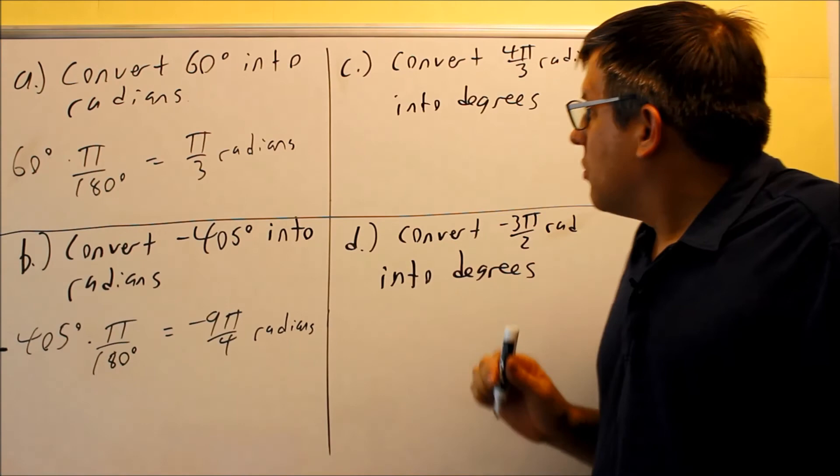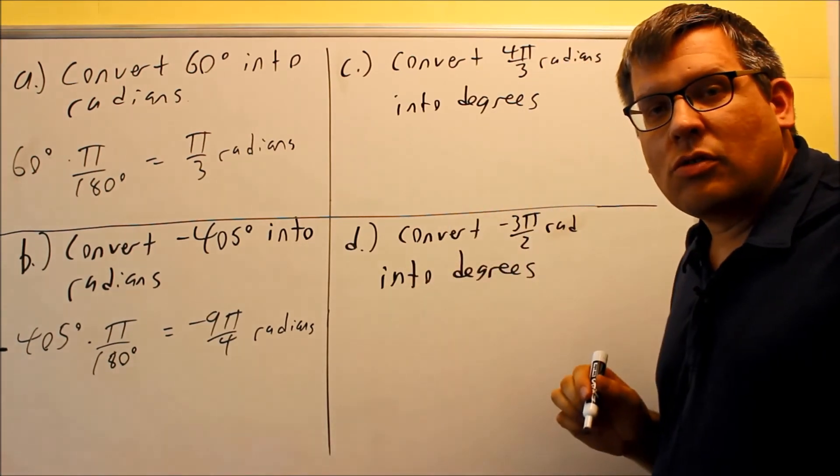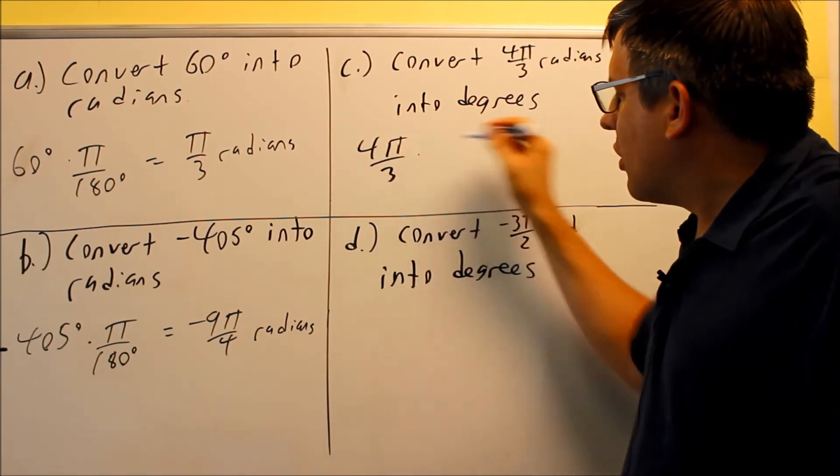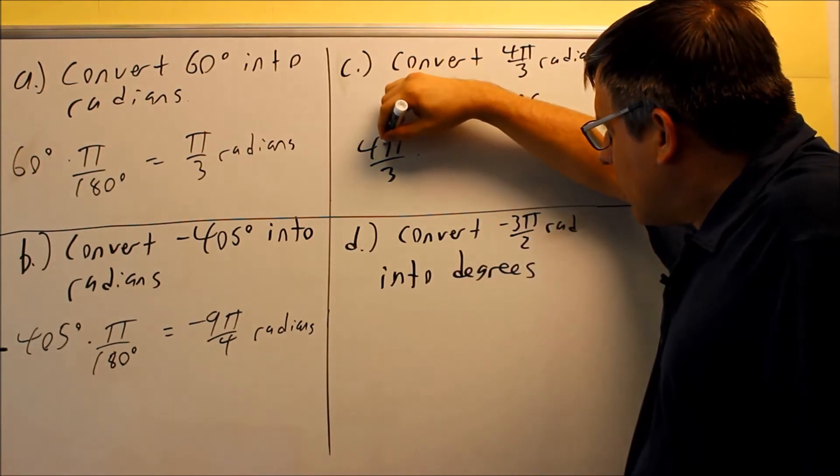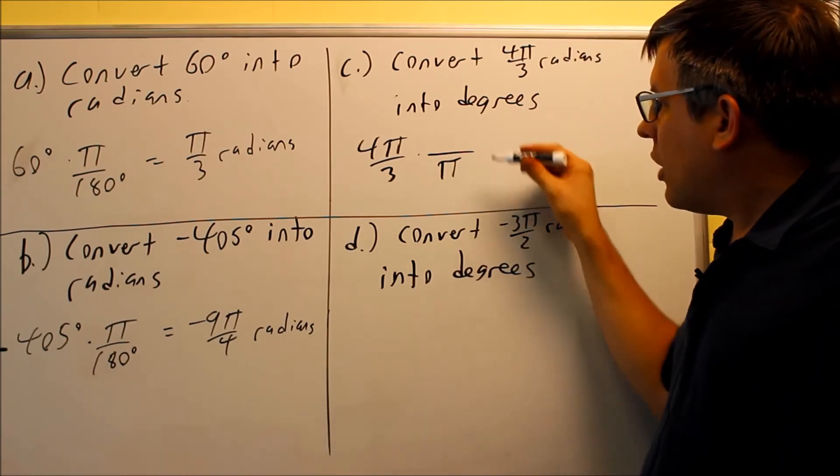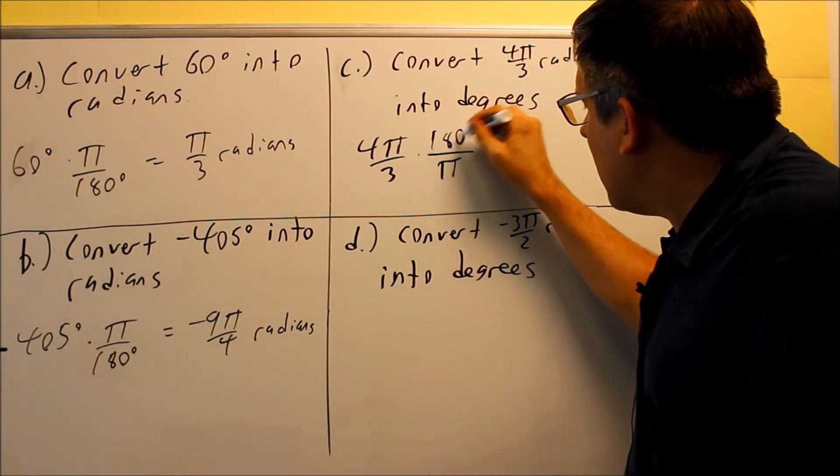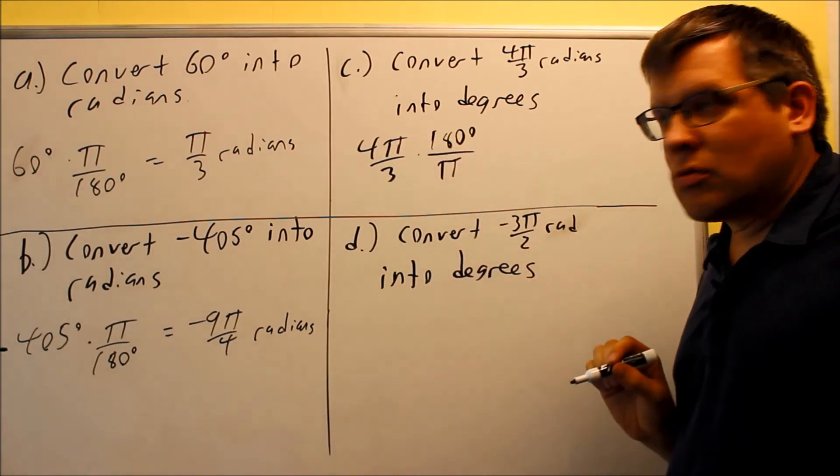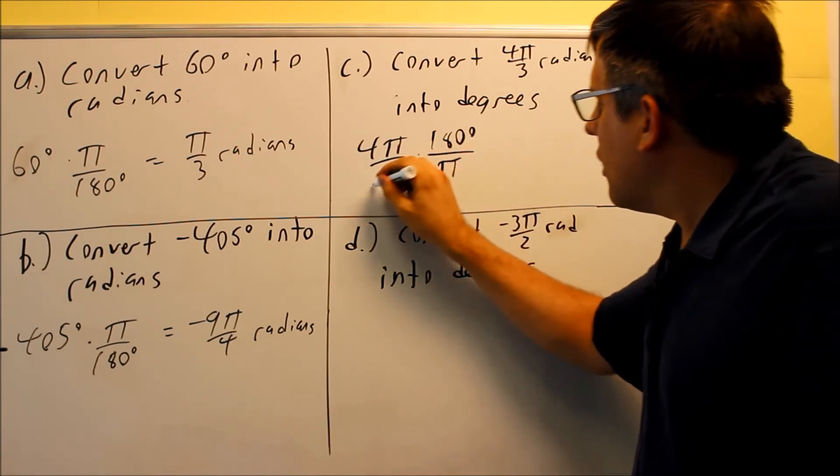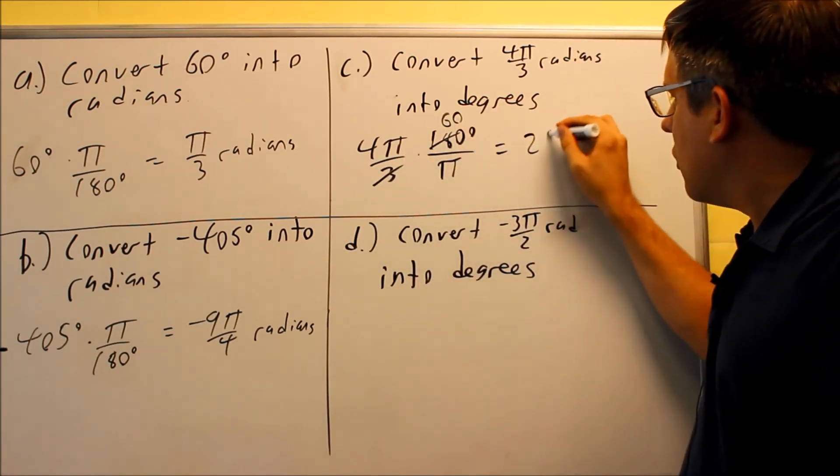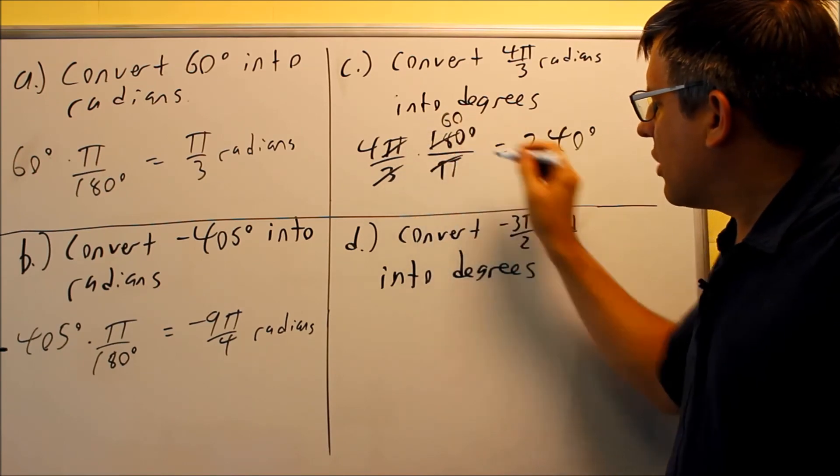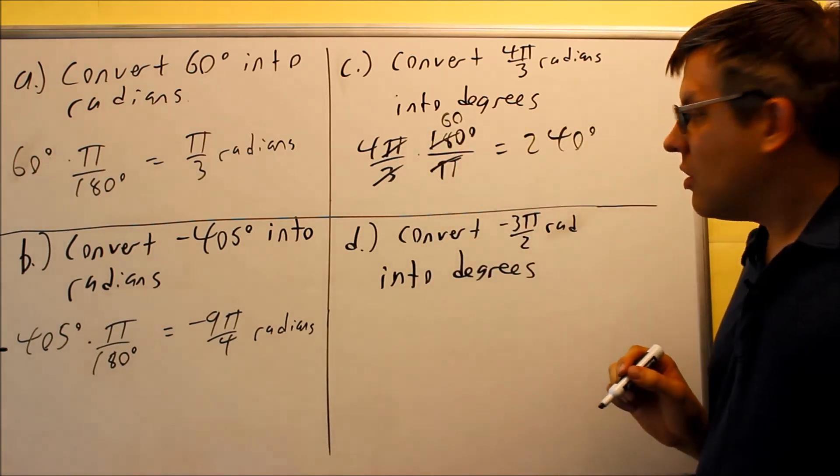Now we're going to go the other direction. We're going to go from radians back into degrees. So doing this, we're going to start with our 4π over 3. That's my radians. Now this time, I want the π on top to cancel. So that means that when I set my formula up here, I need to put the π in the bottom and the 180 is going to go on top. That way the π's cancel. I'll be left with degree measurement as a result. So 3 can go into 180. This goes in there 60 times and that gives us 240 degrees as our answer. Again, the π's cancel out as well, so then you just get 240 left as your answer.